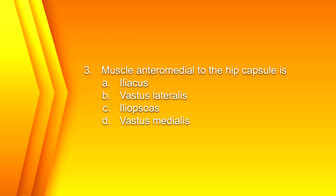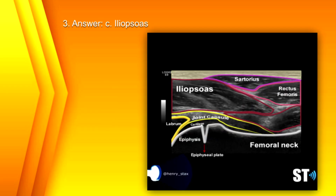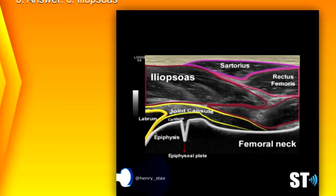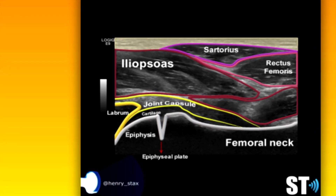Number 3. The muscle anteromedial to the hip capsule is: A. Iliacus, B. Vastus lateralis, C. Iliopsoas, or D. Vastus medialis? The answer is C. Iliopsoas. Here you can see the joint capsule, or the hip capsule, with the femoral neck, and here is the iliopsoas muscle.